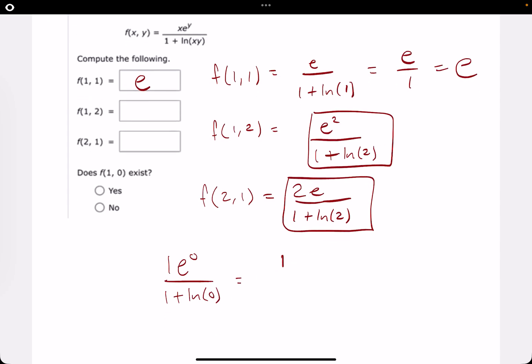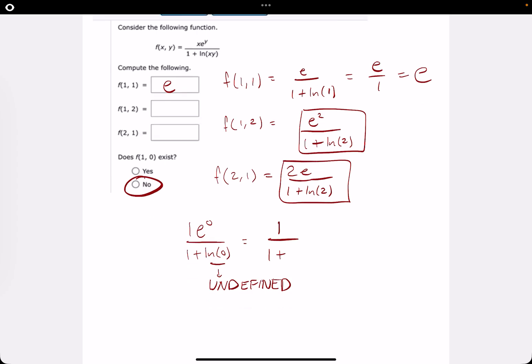e to the 0 does equal 1, so up top we just get 1, but ln of 0 is, in fact, undefined or does not exist. So, no, it does not exist.